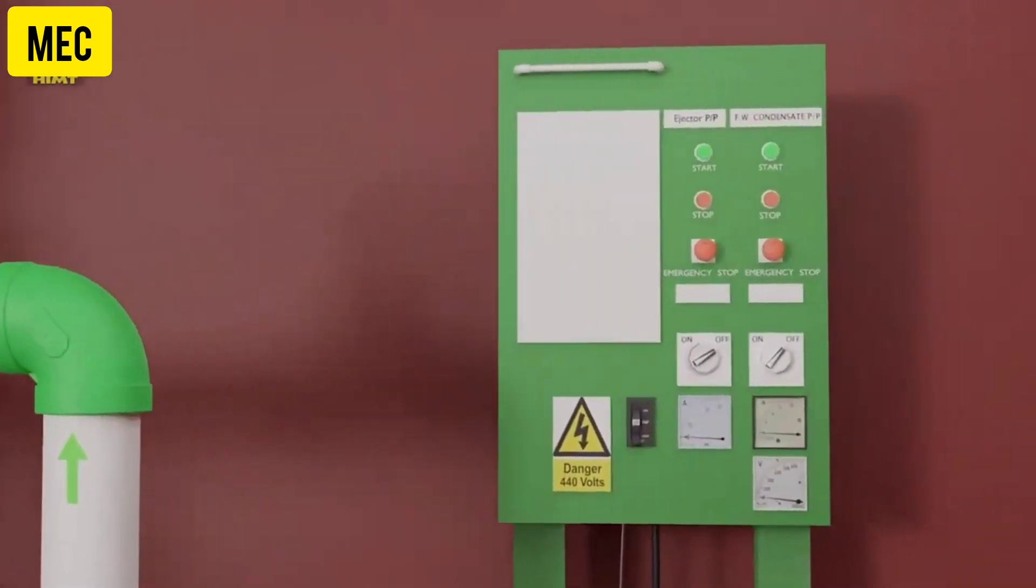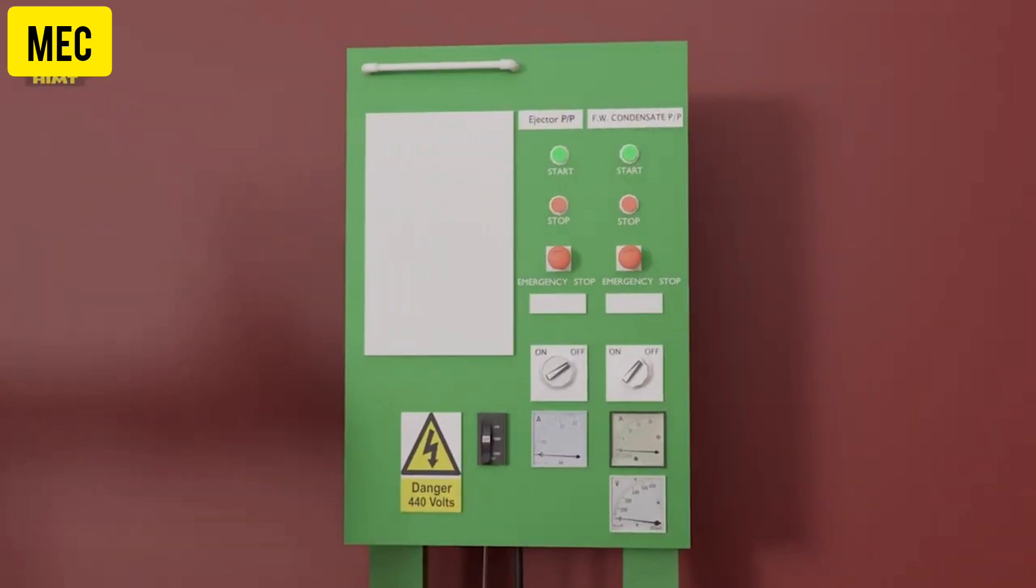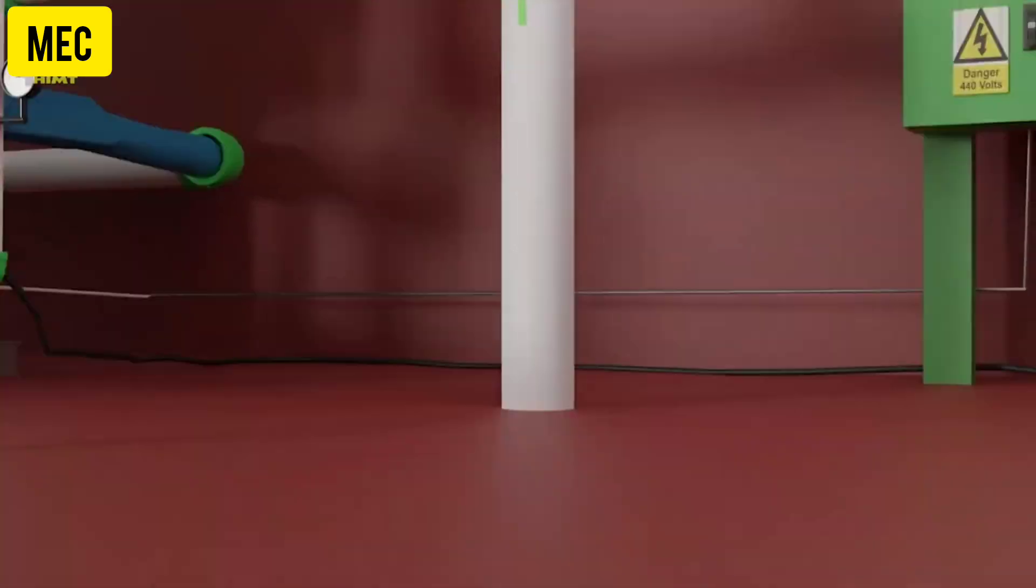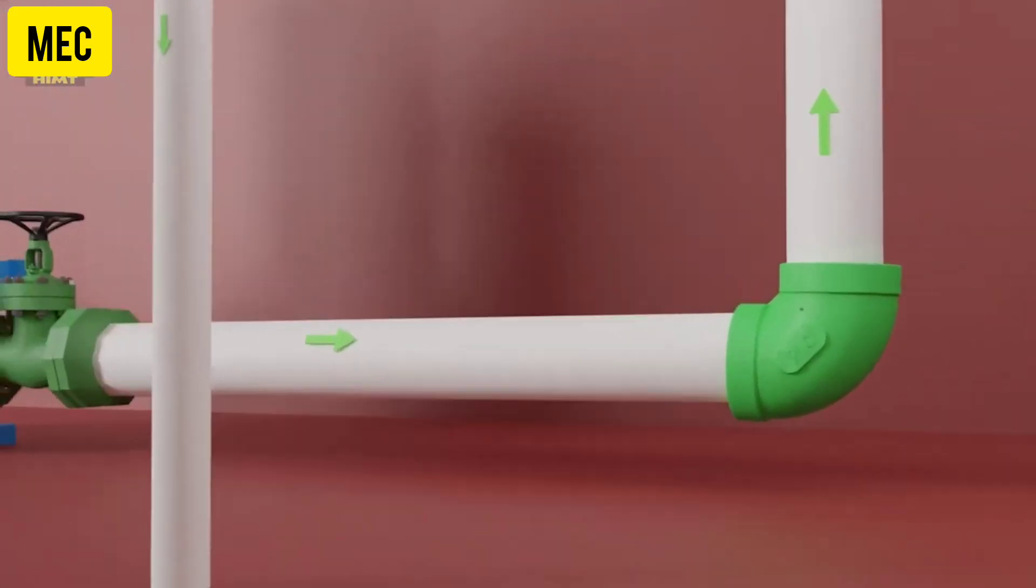Here we have the electrical panel which is used to start the ejector and distillate pump. Various indicating instruments are also fitted to monitor and assess the system's performance.